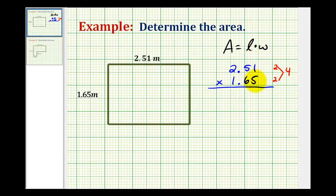So we'll first multiply by 5. 5 times 1 is 5. 5 times 5 is 25, so we carry a 2. 5 times 2 is 10 plus 2, that would be 12.